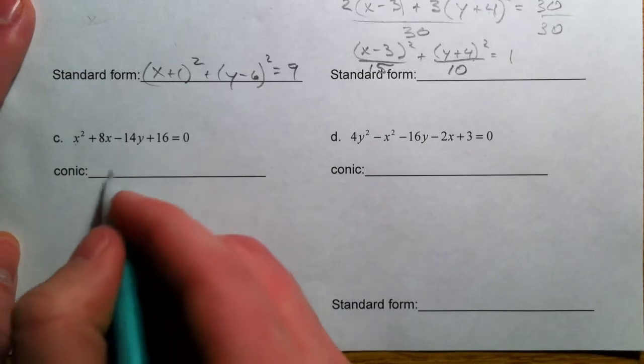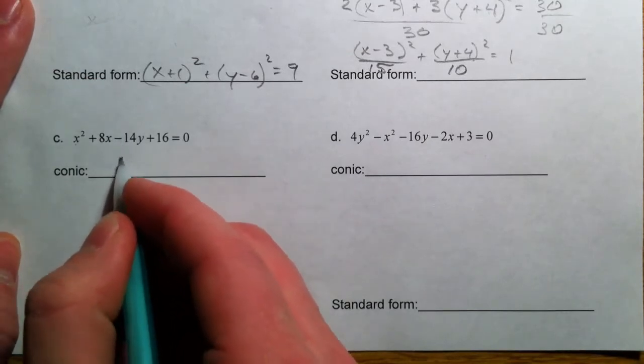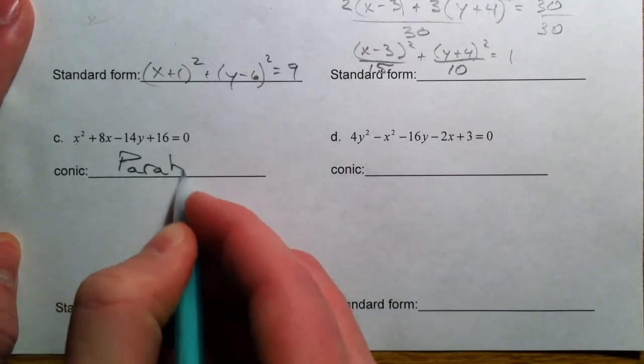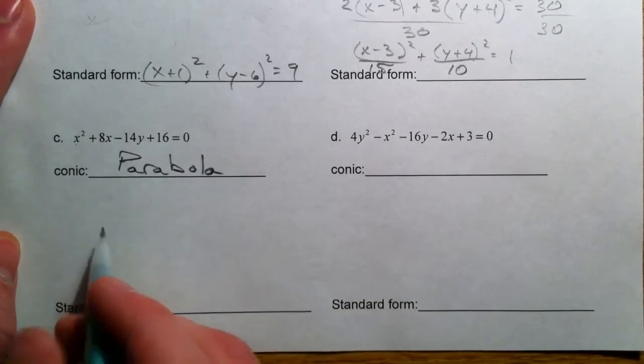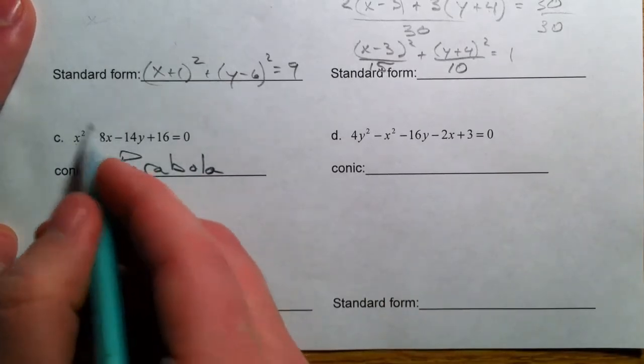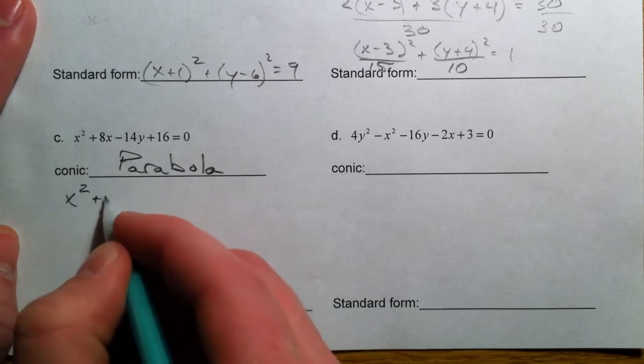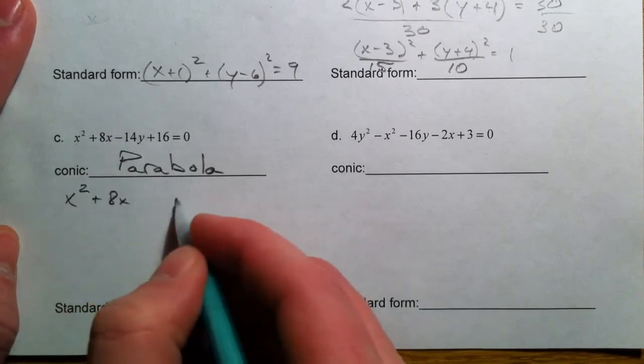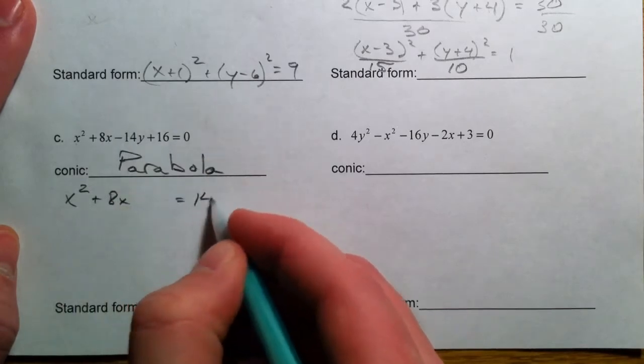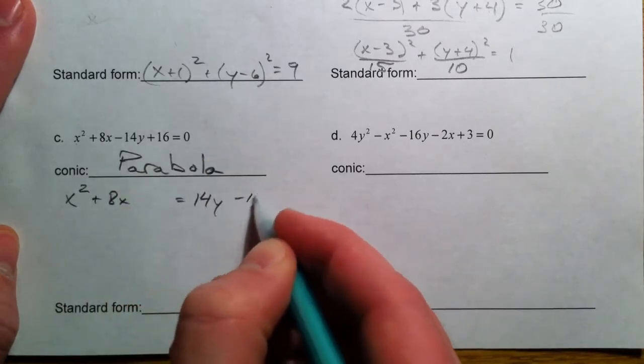One squared, no y squared. So this is a parabola. I'm going to group all of the x's on one side so that I can square them, and I'm going to move the other stuff to the other side. So positive 14y, negative 16.